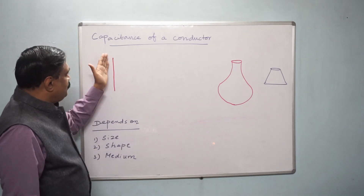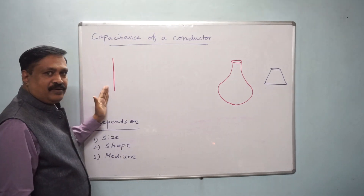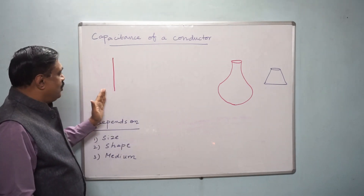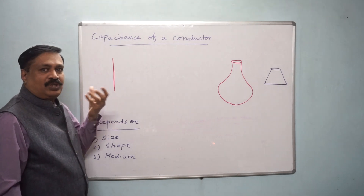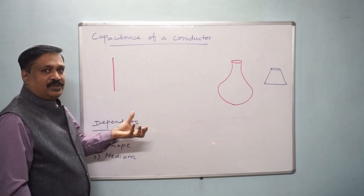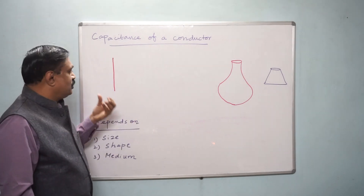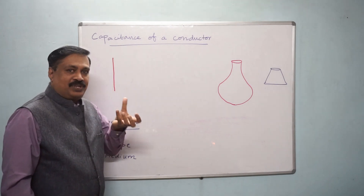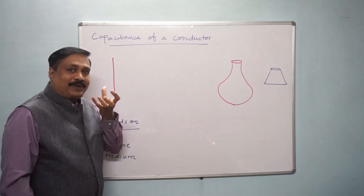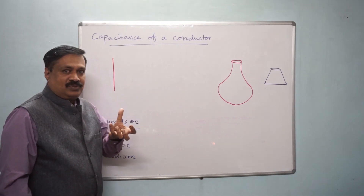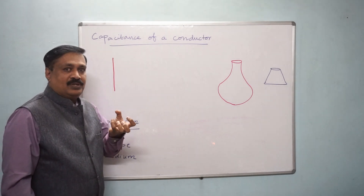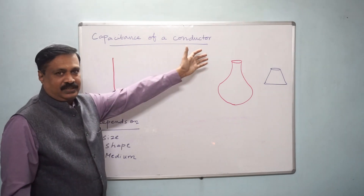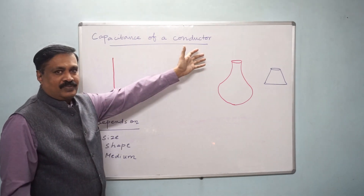Just like here, this is a conductor. We are going to give some amount of charge. Then whether it has a capacity, how much capacity it has to hold the charge — that is the capacitance of a conductor.